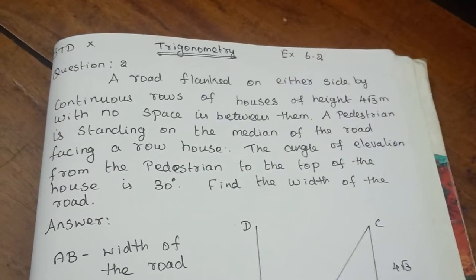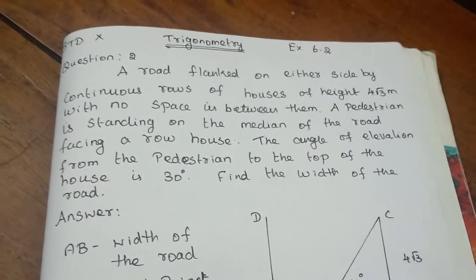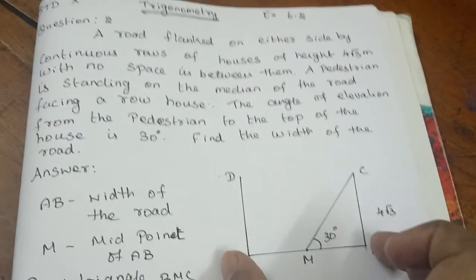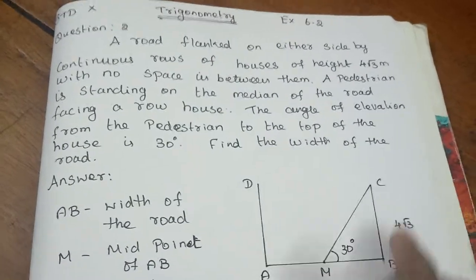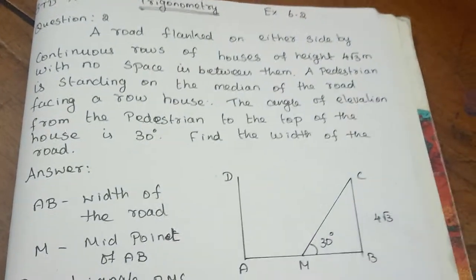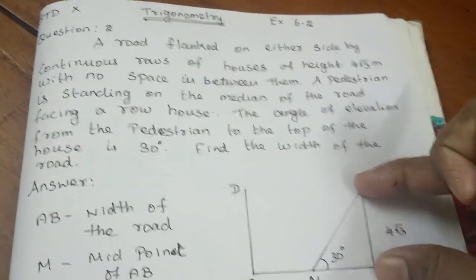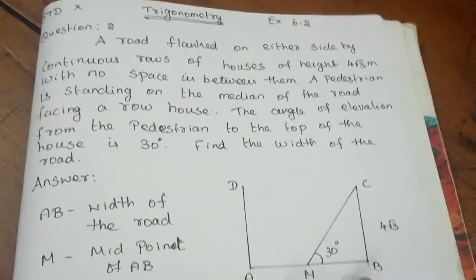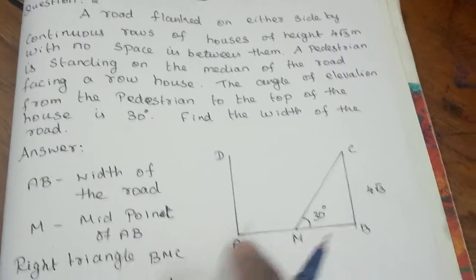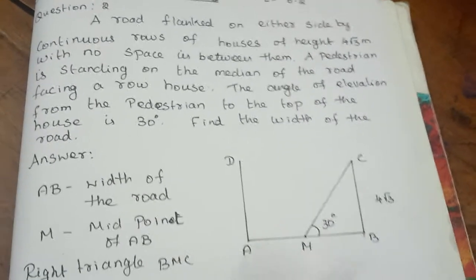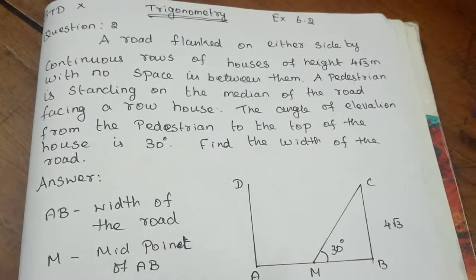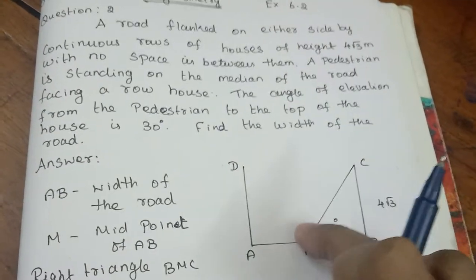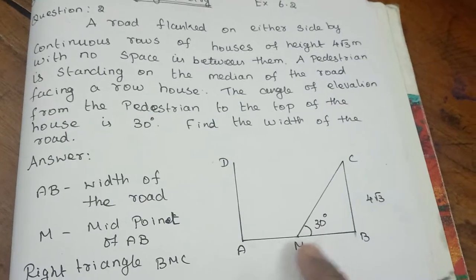As you can see, there are two sides of the road. There is no gap between the houses. This is a row of houses, and this is a row of houses, and we see a road. AB is a road. The pedestrian is standing on the midpoint of this road — this is the pedestrian on the median of the road. This is an elevation.